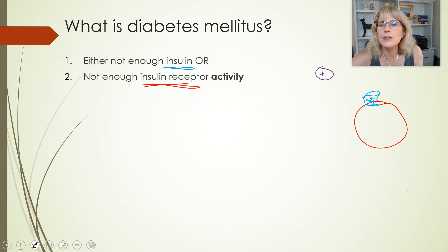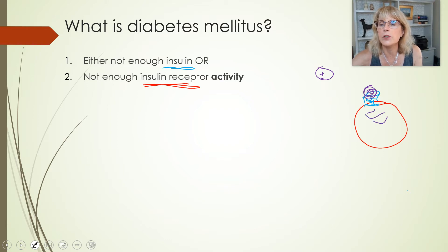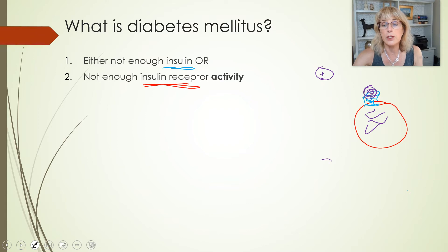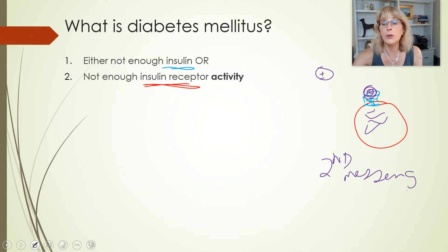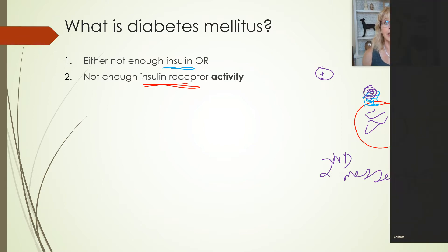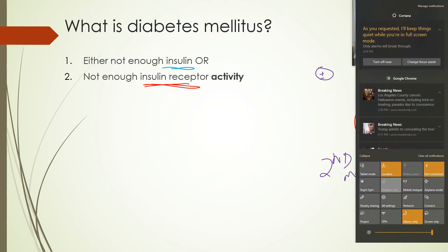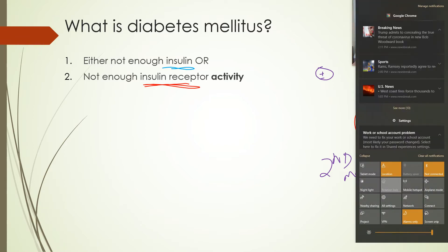This is going to be my insulin, and my insulin is going to dock right there. When my insulin docks, that will initiate a cascade — second messengers. Water-soluble hormones like insulin act by second messengers.